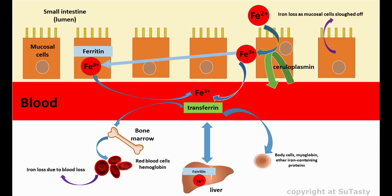When iron is in short supply, less of the iron storage protein ferritin is made. Meanwhile, the number of transferrin receptors on cell membranes increases, allowing more iron to be transported into the cells. On the other hand, when iron is plentiful, more ferritin is made to increase storage capacity. Simultaneously, the number of transferrin receptors on cell membranes decreases, so a decreased amount of iron is picked up from the mucosal cells and transported to tissues.